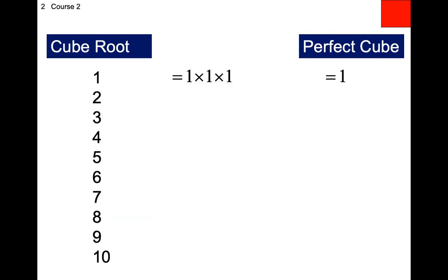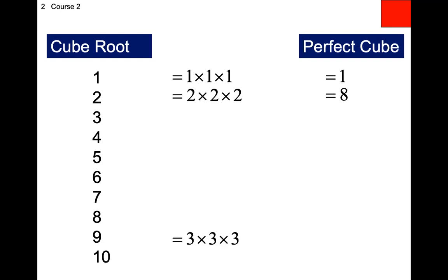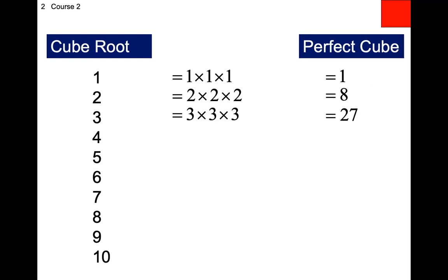Two times two times two is 8, and three times three times three: three times three is 9, times another 3 is 27. We went 1, 8, 27 — jumping really high really quickly. Remember perfect squares went 1, 4, 9, 16, 25 — the first five got us to 25. Well, the first three perfect cubes already got us to 27. Four times four times four: 4 × 4 is 16, times another 4 is 64 — getting big really quickly.